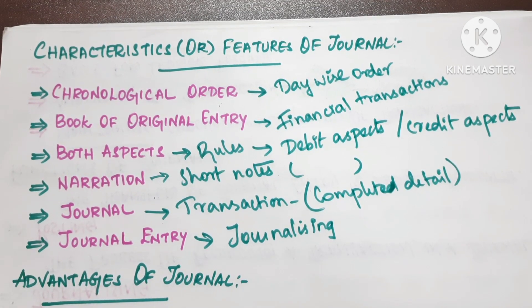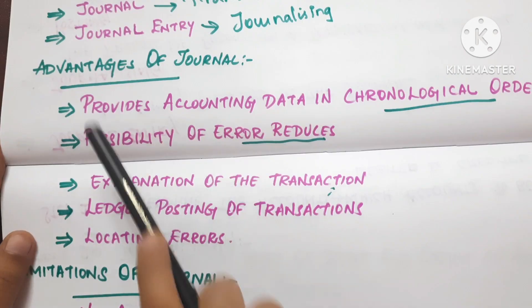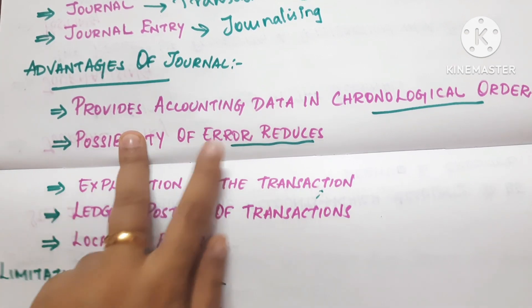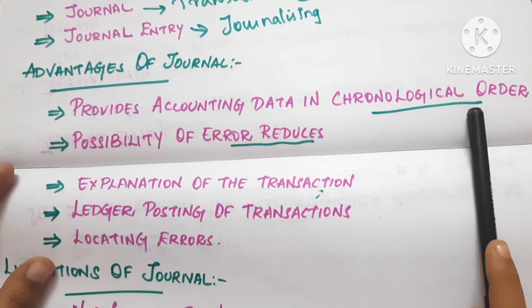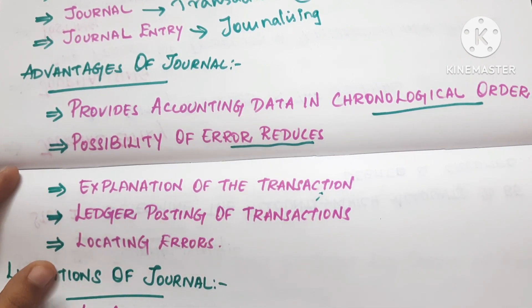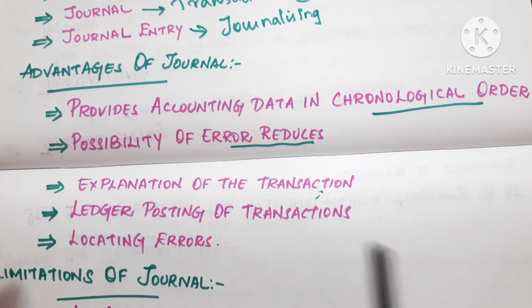A journal entry is a process of recording a transaction in the journal book. The advantages of journal include: providing accounting data in chronological order, reducing the possibility of errors, giving explanation of transactions through narration, and facilitating ledger posting.